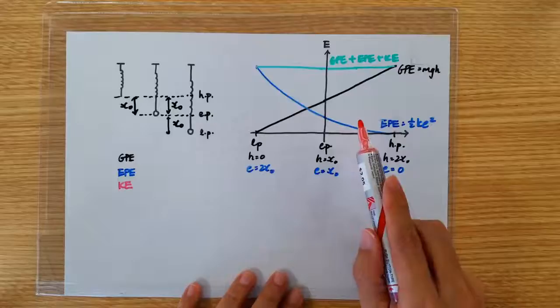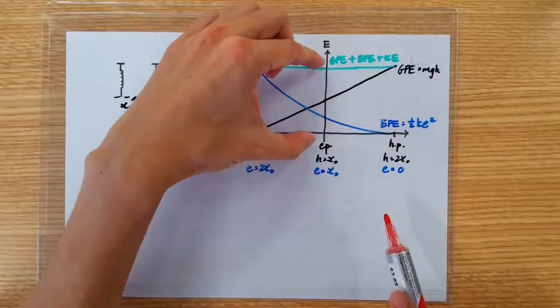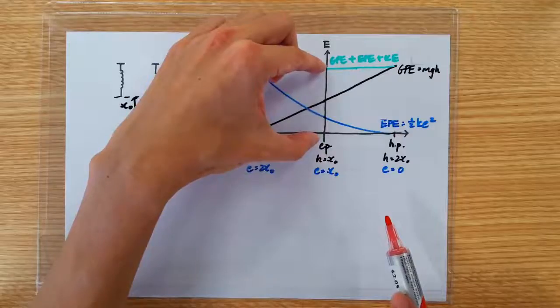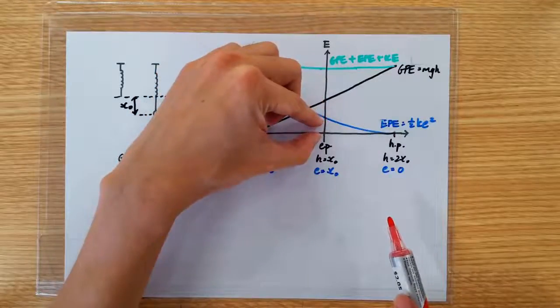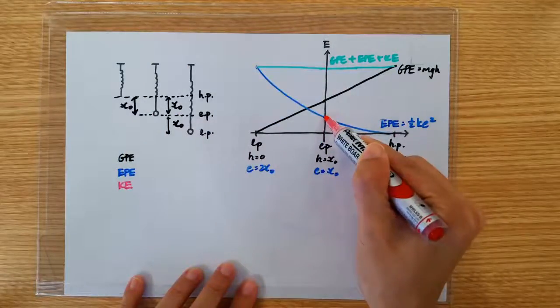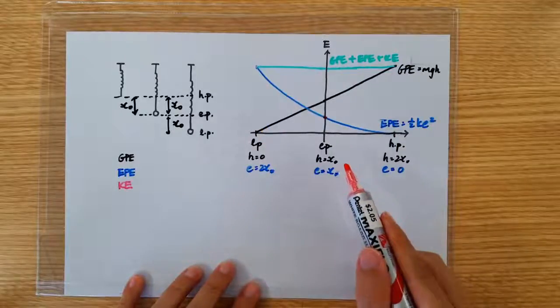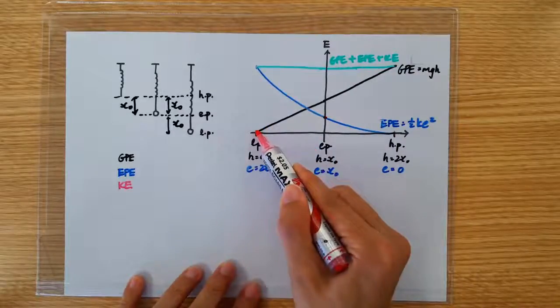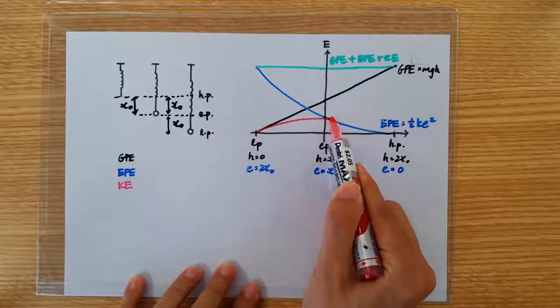So again, the three forms of energy should add up to a constant. Since the total has got to be four units, and we have two units of GPE and one unit of EPE, the amount of KE should be one unit, right? Somewhere here. So it's a quadratic graph. So I'm going to join up these three points with a quadratic curve.